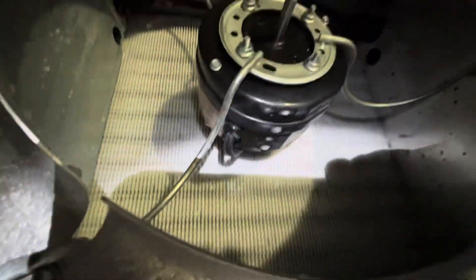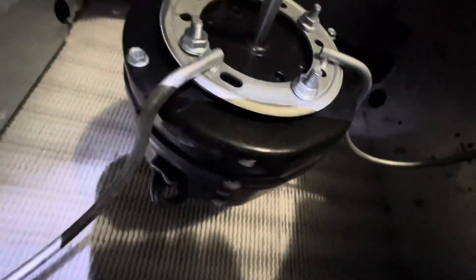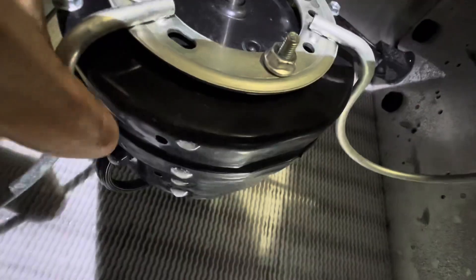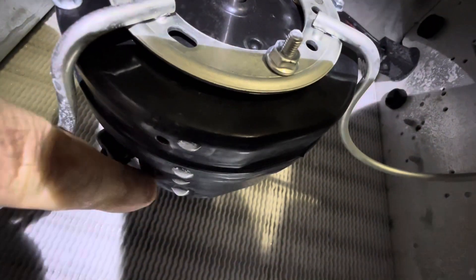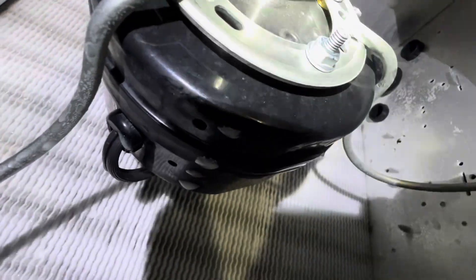Remember when replacing these motors, there's two drip holes right there—those black holes. Right there, right there. Those black holes are drip holes, drain holes for the ECM motor. Make sure you put those down.